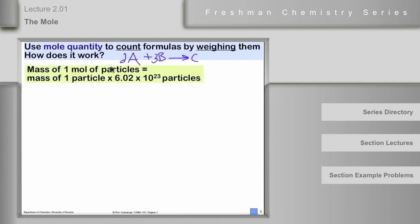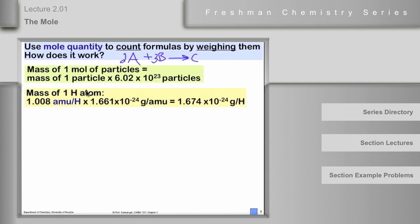The mass of one mole of particles is equal to the mass of one particle times Avogadro's number of particles. So if we want to determine how many moles there are in a given quantity, we need to know the size of the particle. The mass of one hydrogen atom can be calculated using the atomic mass of hydrogen, 1.008 AMUs, times 1.66 × 10⁻²⁴ grams per hydrogen atom.